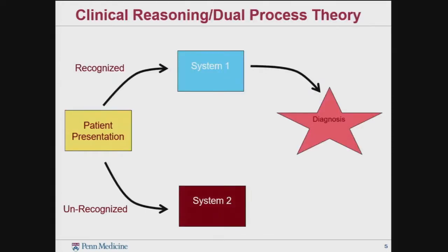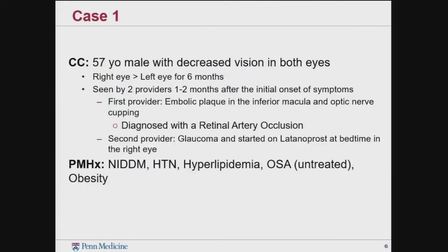I want to take a little bit of time to discuss the process of clinical reasoning. For me, it fits into two systems. In glaucoma practice, I have to get through large numbers of patients, so there's the quick, recognizable presentation that leads to a diagnosis. But there's also system two, which requires slower thinking and collecting a bit more information to arrive at the diagnosis. Hopefully I'll give some red flags that allow you to shift from system one to system two patients.